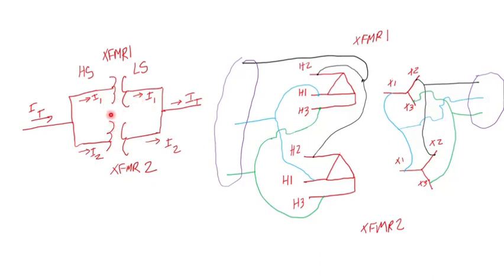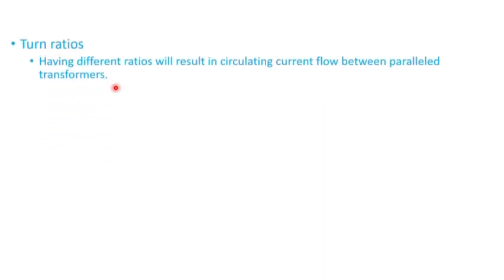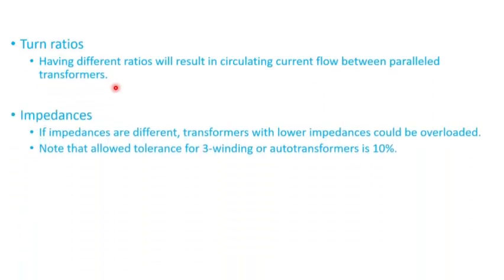In other words, the transformer, let's say transformer one, will have to carry I1 plus the circulating current, which might be higher than its rating, what it can handle, so it can cause some damage. That's important to remember.